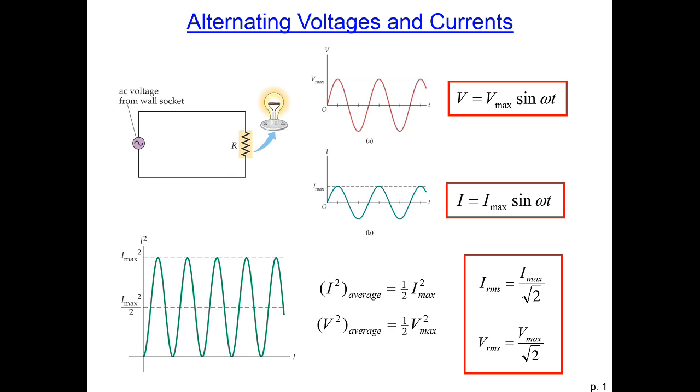The concept here is that we're taking the mean value of the square of the current and then taking the square root—that's called taking the root mean squared of the current. This works the same for voltage. The root mean square of the voltage is the maximum voltage divided by the square root of 2. The core concept is finding the measure of the average magnitude of a wave function.